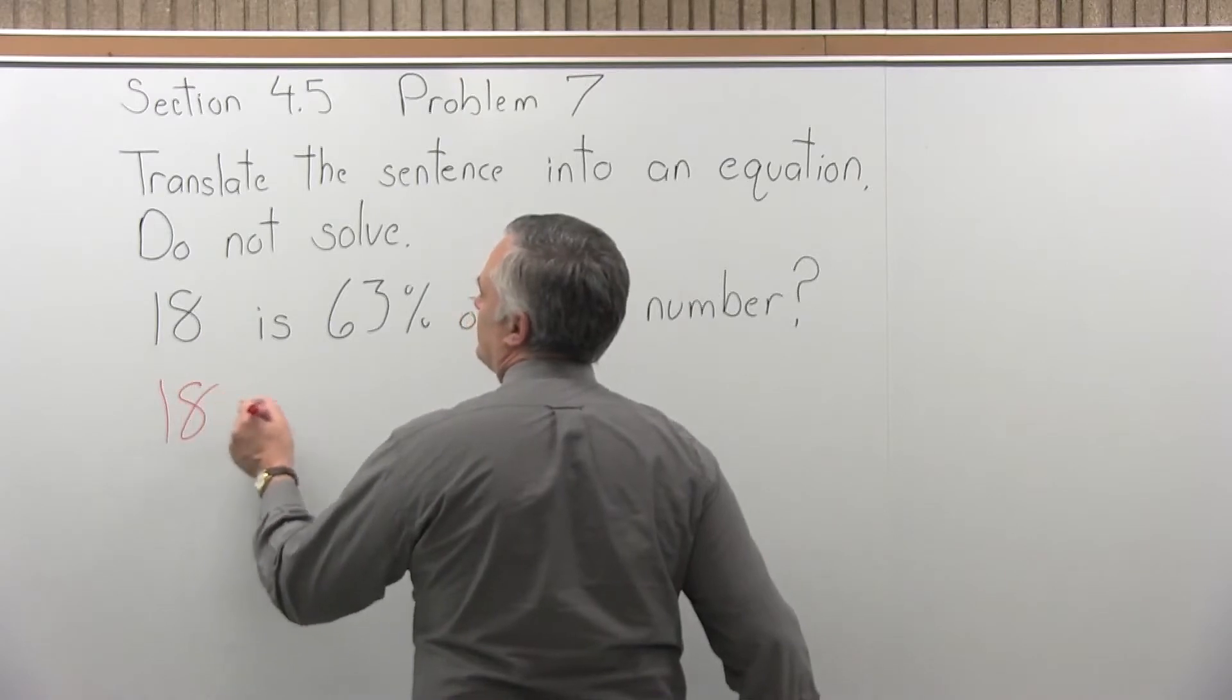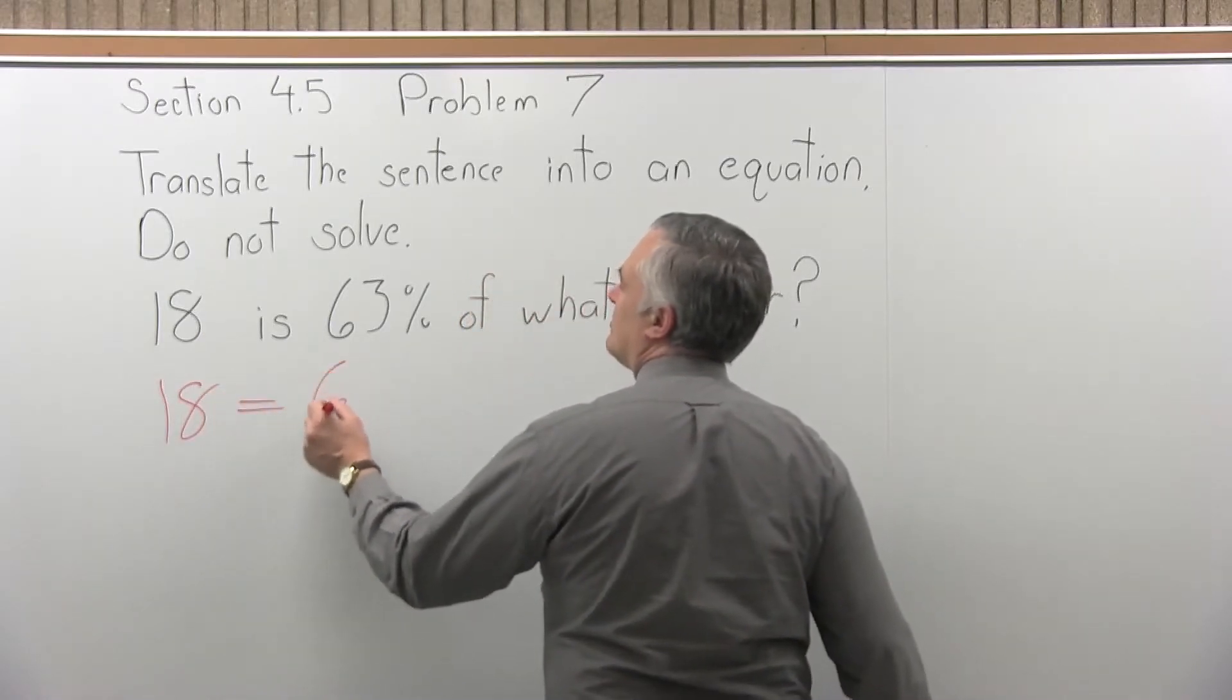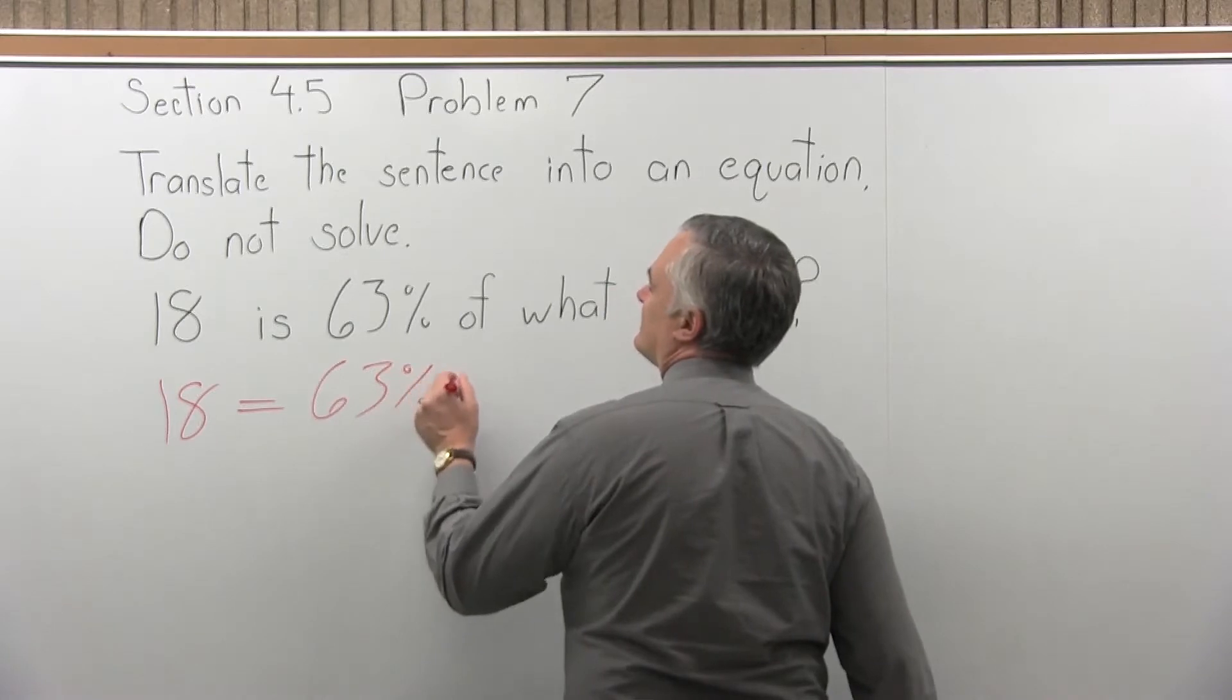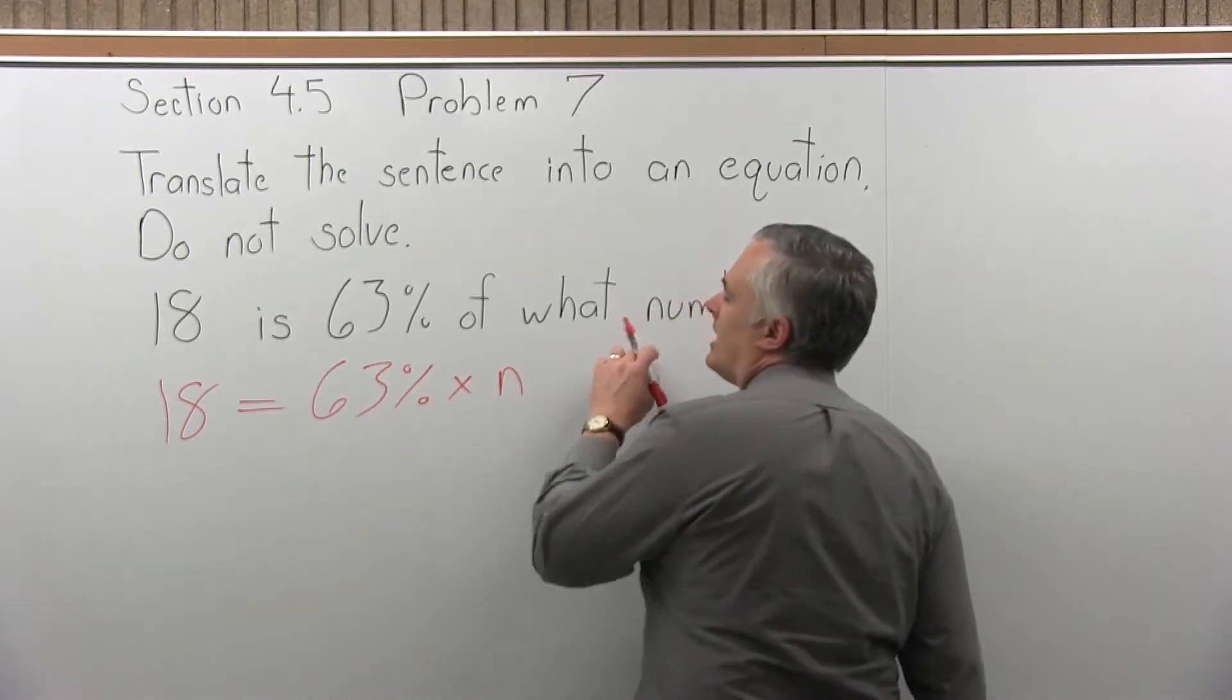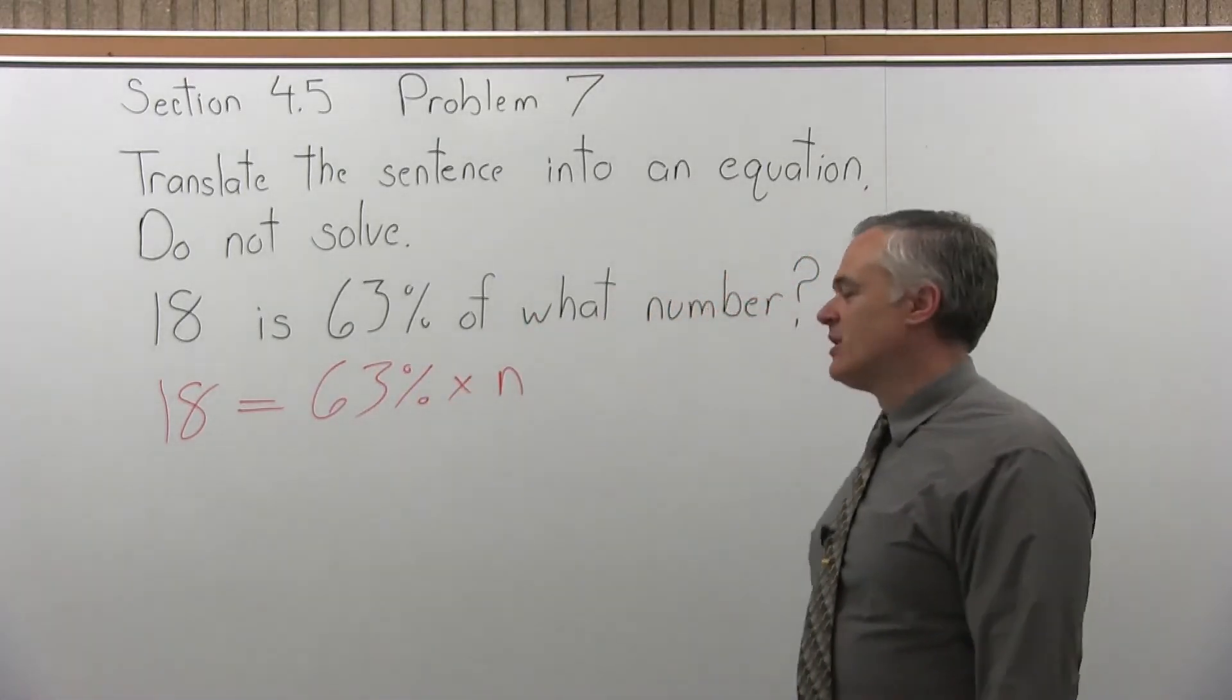18 is becomes 18 equals, 63% of becomes 63% times what number, it's unknown, we can just use n for number, leave it as a variable.